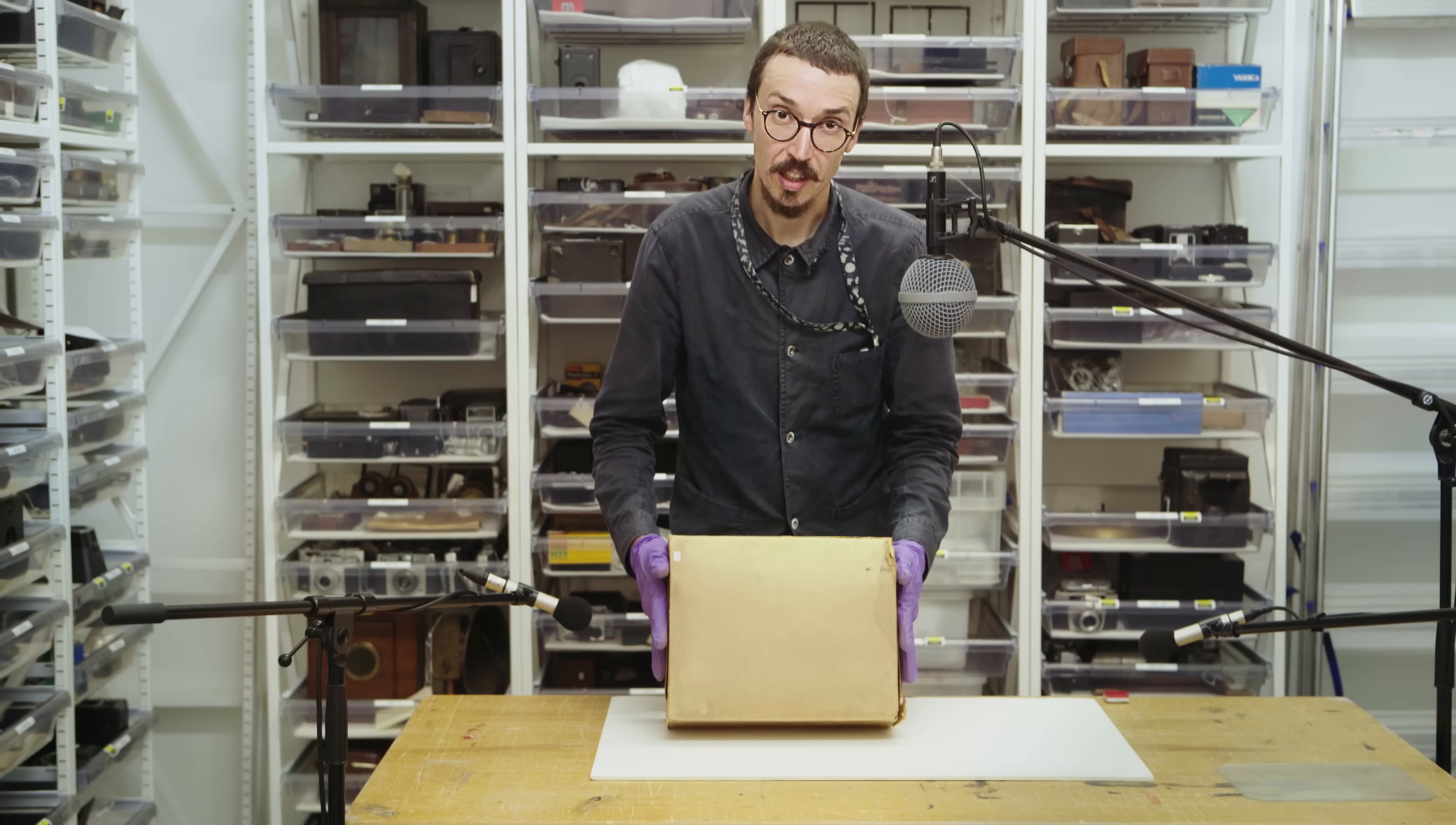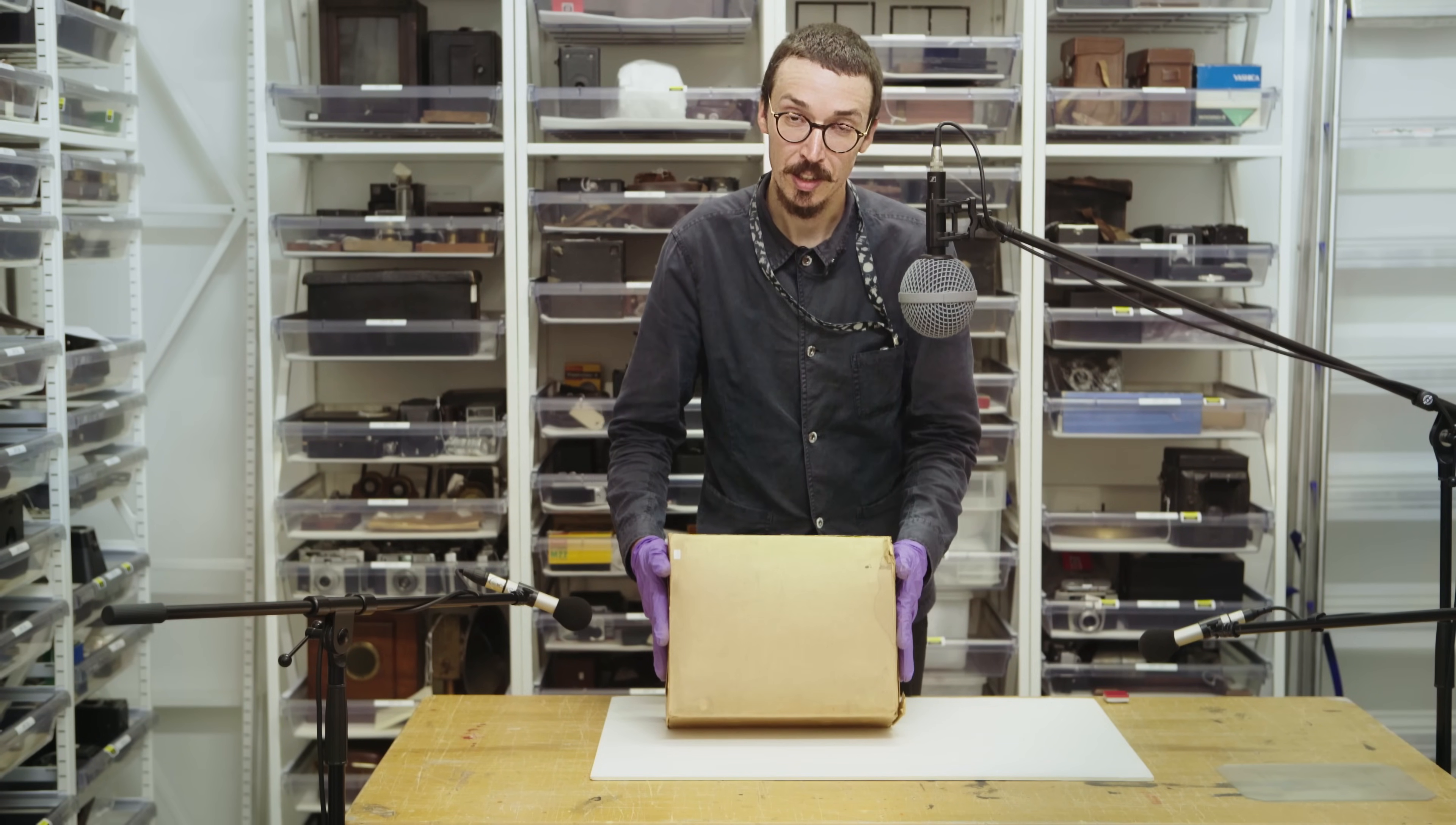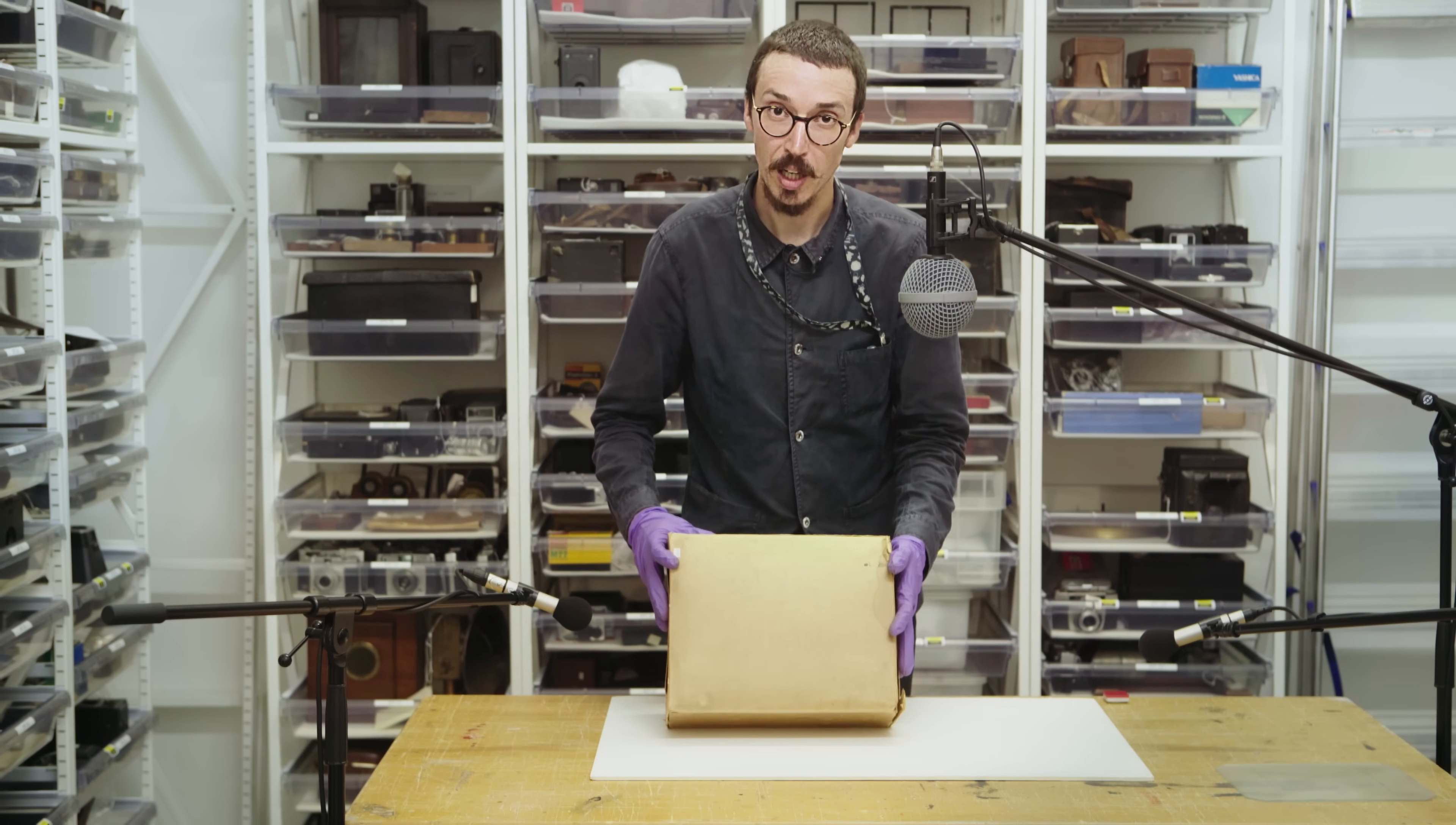When the object is catalogued it will come out of this box and into more suitable storage, but we will certainly still keep the box as it is considered part of the original object.